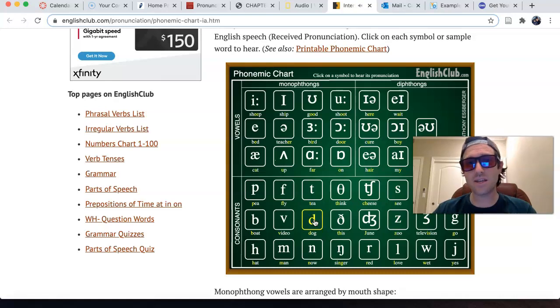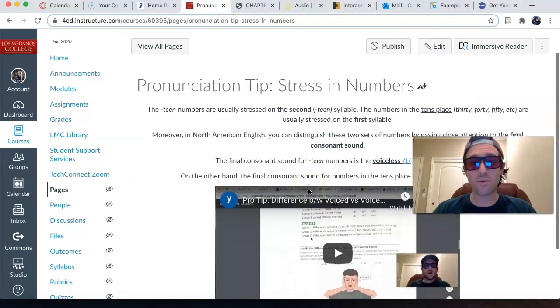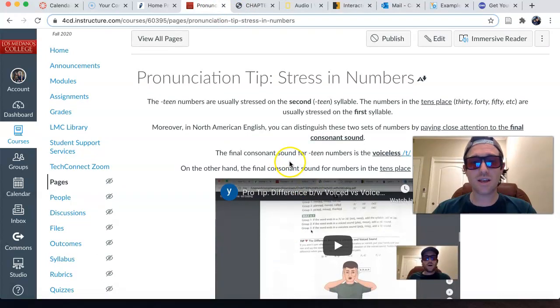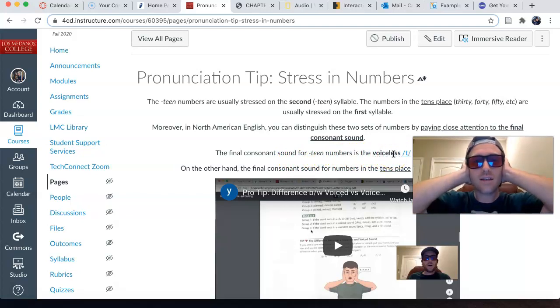60, 70, 80. Pretty interesting. So that could be another way to help you remember, if the final consonant sound for teen numbers is a voiceless T. No vibration, right?